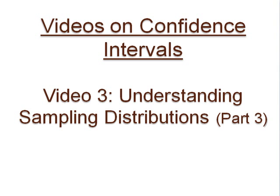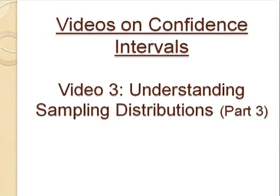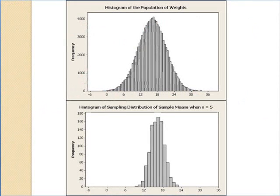Greetings to those interested in learning about confidence intervals. Picking up where we left off, we discovered that if we repeatedly take samples of size 5 from a normal population, the distribution of sample means will also be normal.